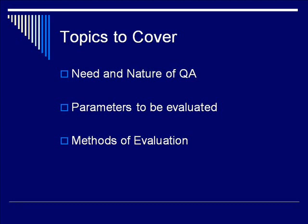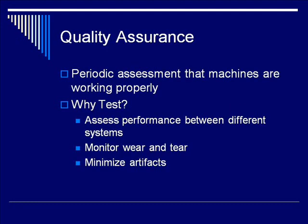The need and nature of QA is basically what is quality assurance and why do we need to do it. The parameters and the methods is what do we evaluate and how do we evaluate it. Quality assurance is a periodic assessment to make sure that your machines are still working properly. Ultrasound machines are very complicated, things can go wrong in a number of steps, and consistently testing things is a good way to see what is working, what isn't, and how to fix it.